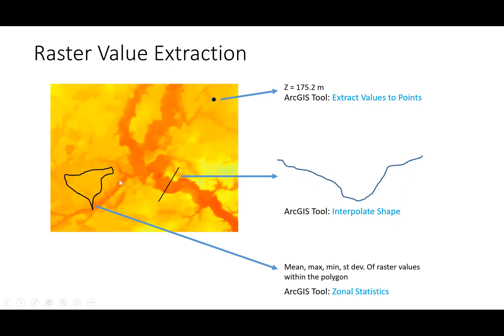Sometimes we want the average raster value within a certain domain, such as a polygon. Using zonal statistics, you can find the mean, maximum, minimum, and standard deviation of raster values within that polygon. These are some of the key operations performed on raster datasets in hydrologic applications, and in the following units we will learn how to use these tools in ArcGIS.